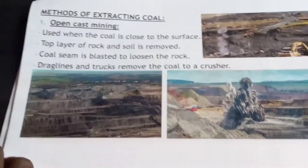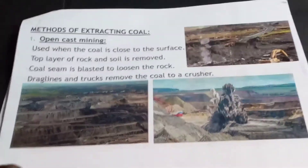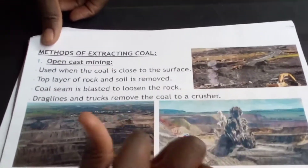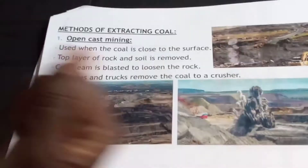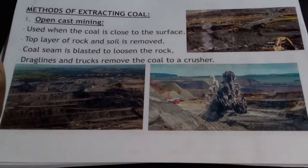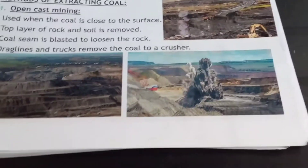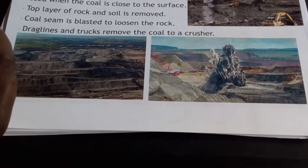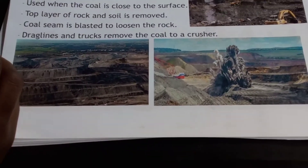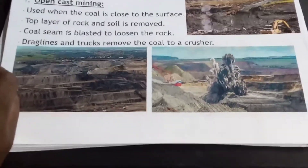Now, how is coal extracted? We said it is formed deep underground. It is extracted by what we call open cast mining, where we dig underground and extract the coal from the seams. Open cast mining is used because coal is close to the surface. The top layer of rock and soil is removed, coal is blasted to loosen the rock, and drag lines and tracks remove the coal.